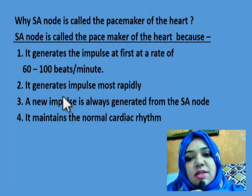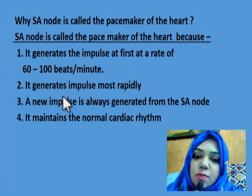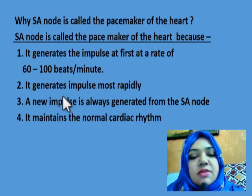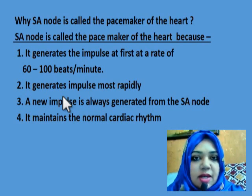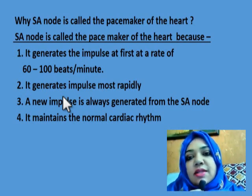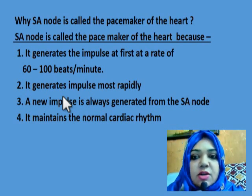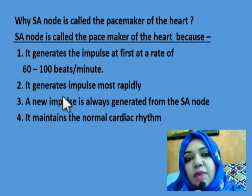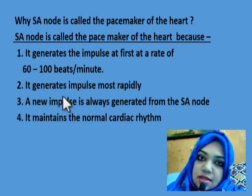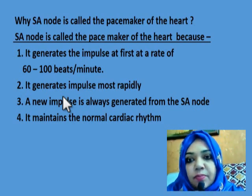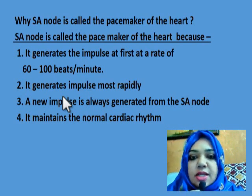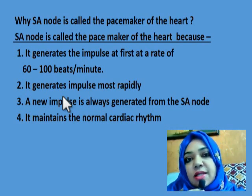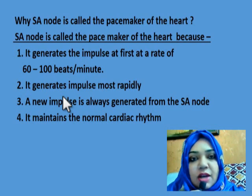Why is the SA node called the pacemaker of the heart? There are four points to mention. First, it generates impulses at a rate of 60 to 100 beats per minute. Second, it generates impulses most rapidly. Third, a new impulse is always generated from the SA node. Fourth, the SA node is our natural pacemaker and maintains normal cardiac rhythm.